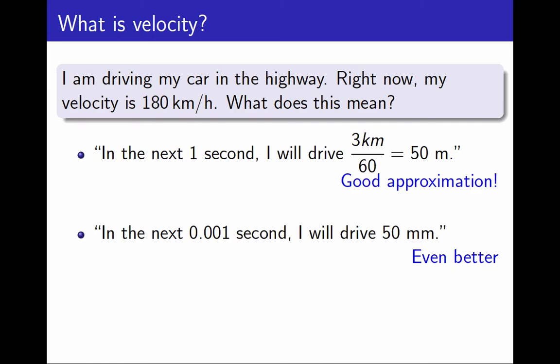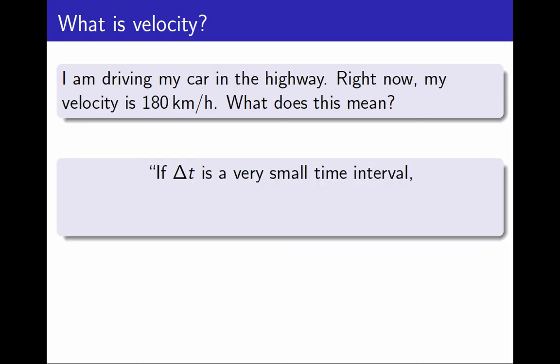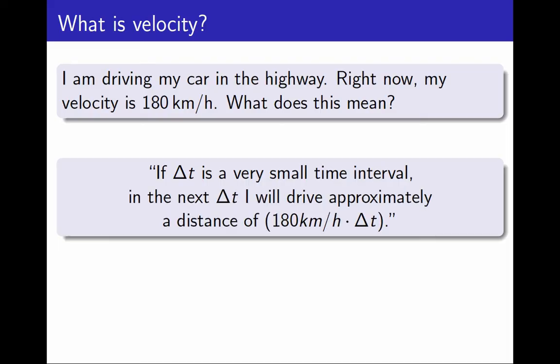I think I have a good explanation now. If I take a very small time interval, call it Δt, then in this time interval, starting right now, I will drive approximately 180 km per hour times Δt. This is an approximation, and it is a better approximation the smaller the time interval is. That is my explanation of what it means that my velocity right now is 180 km per hour.